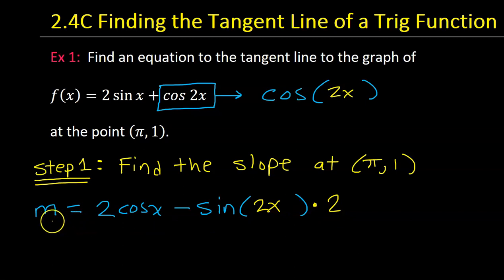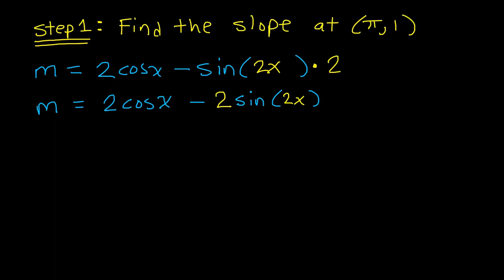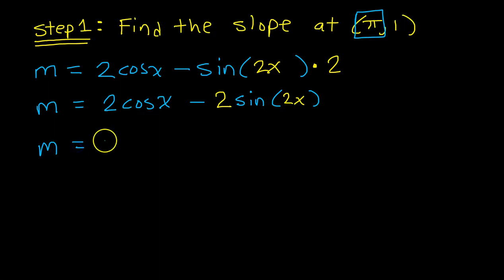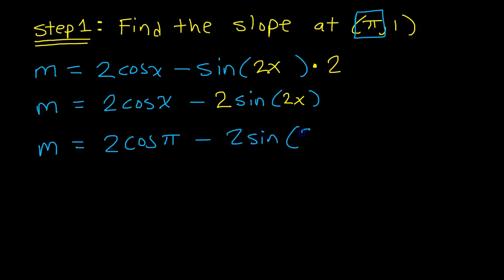This derivative is a function now telling us the slope. Putting the 2 in front, we want to find the slope at the point pi comma 1. What really matters here is the x value, which is pi. So if I substitute pi for x, that should give me the slope: 2 cosine pi minus 2 sine 2pi.